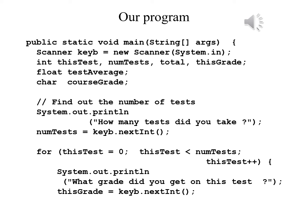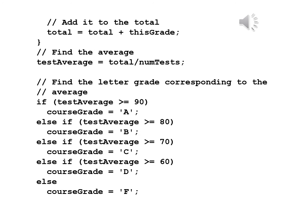To find the number of tests, we use System.out.println with the prompt "How many tests did you take?" and then read it with numTests equals keyboard.nextInt(). We begin the loop: for thisTest equals 0; thisTest less than numTests; thisTest++. Inside the loop, System.out.println asks "What grade did you get on this test?" Then thisGrade equals keyboard.nextInt(). We end the loop by adding to the total: total equals total plus thisGrade, then close brace. After the loop, we find the average: testAverage equals total divided by numTests.